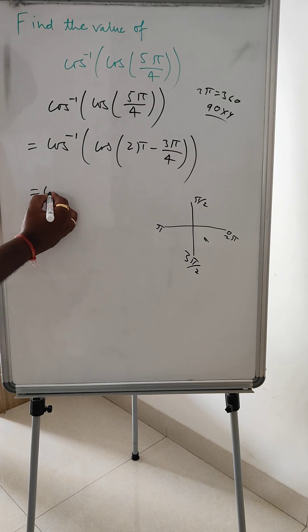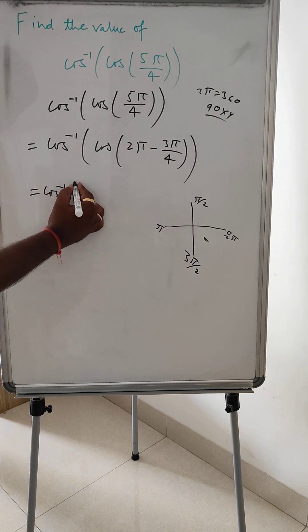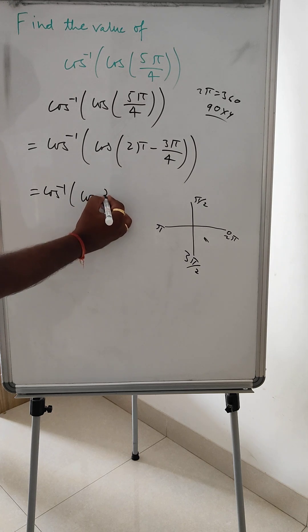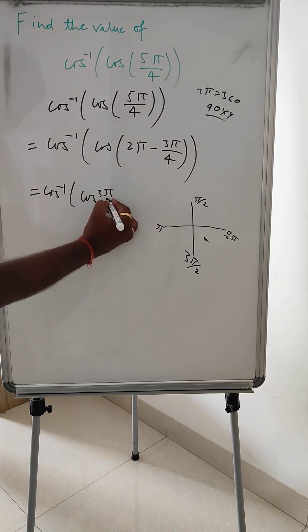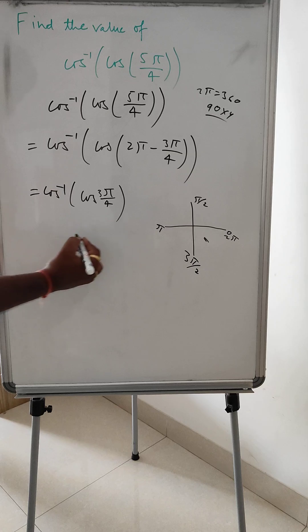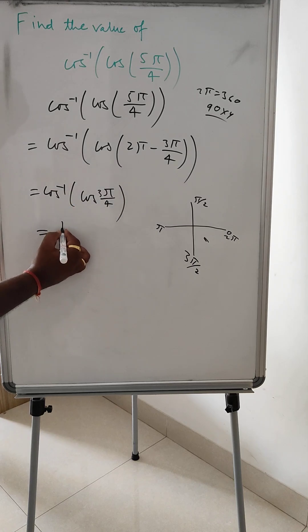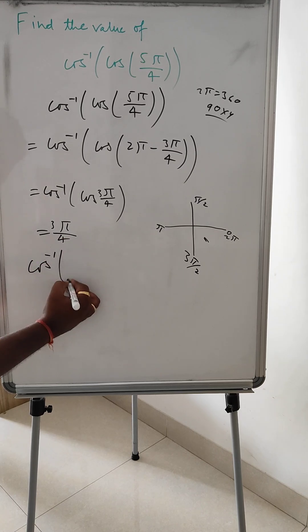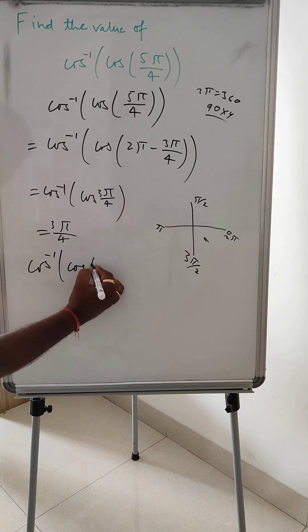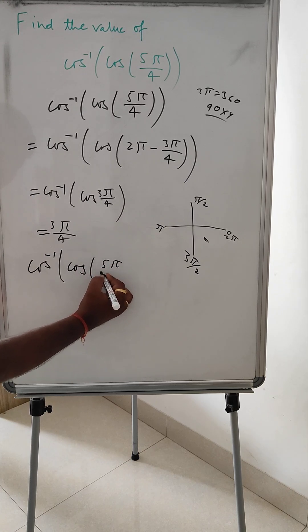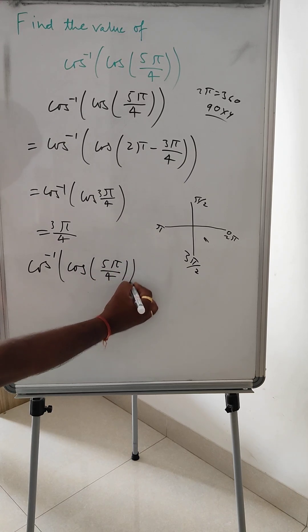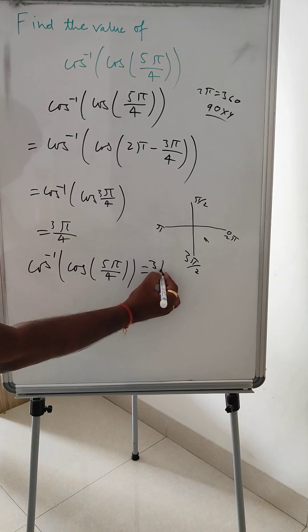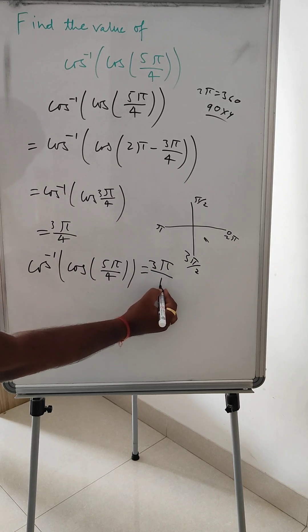Then cos, here cos 3π/4. So now 3π/4. The value of cos inverse cos 5π/4 is equal to 3π/4.